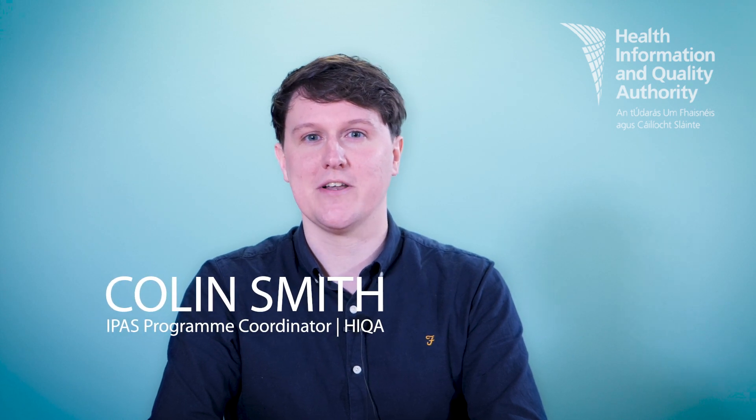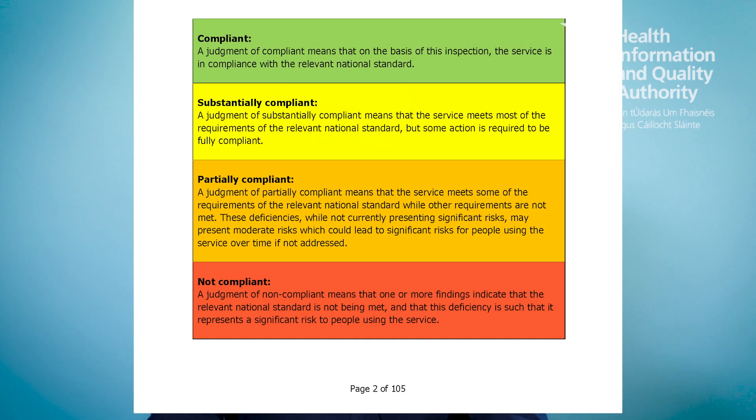The document is divided into two sections: the Self-Assessment Questionnaire and the Quality Improvement Plan. In Section 1, you will have the option to select one of four judgments for each of the standards. The four colour-coded judgment options are Compliant, Substantially Compliant, Partially Compliant and Not Compliant.